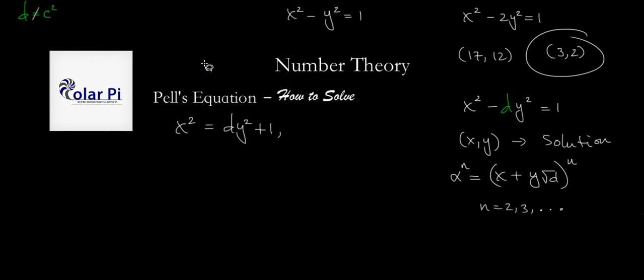For the equation where d = 2, we first found one solution by the earlier strategy: x² - 2y² = 1 with solution (3, 2). But then by what I just stated, if we write α = 3 + 2√2, and raise α to different powers n starting with n = 2, then the coefficients will also make a pair of solutions (x, y).